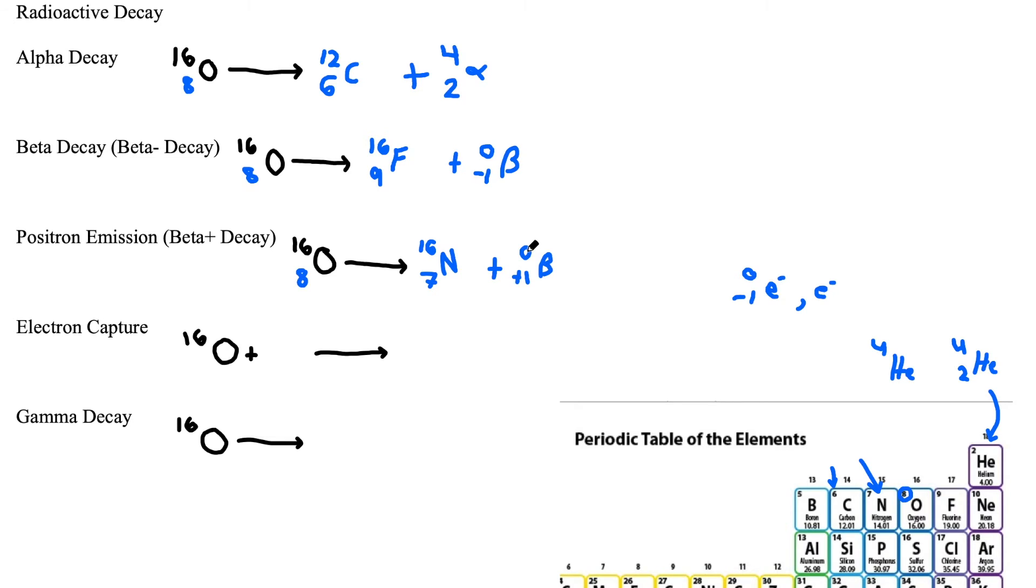Finally, we can go to electron capture. Electron capture is a little bit different than the rest, but we can think of it as kind of reverse beta negative decay. So instead of emitting an electron, we're picking up an electron. So electron capture, we are capturing this electron that has a negligible mass and a quote-unquote atomic number of negative 1. So our atomic number of oxygen is 8. So if we do 8 minus 1, we get an atom of 7. So this is nitrogen. And then we need to keep our mass number the same. So this would be 16.